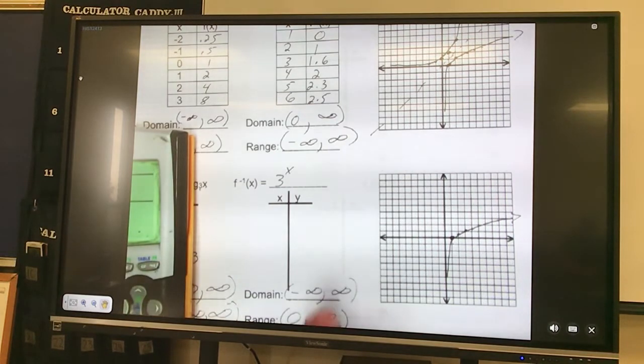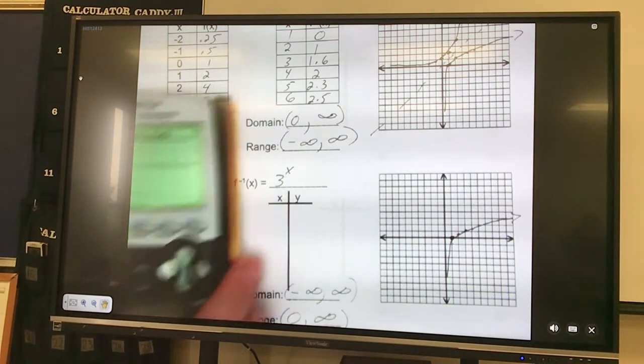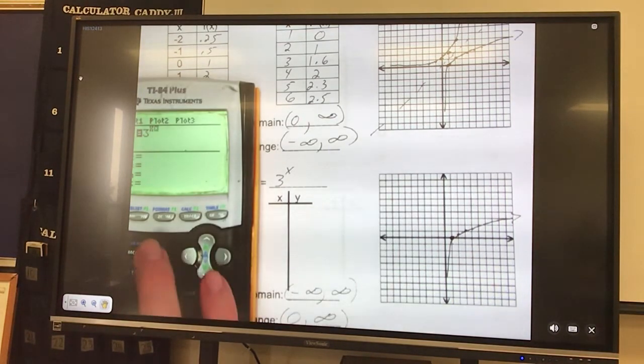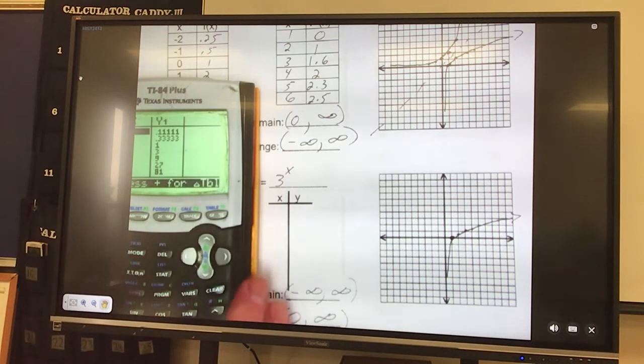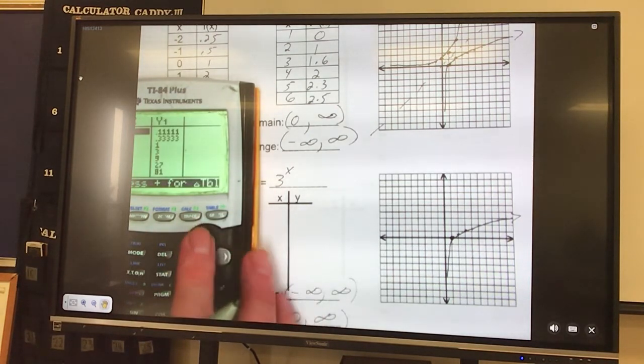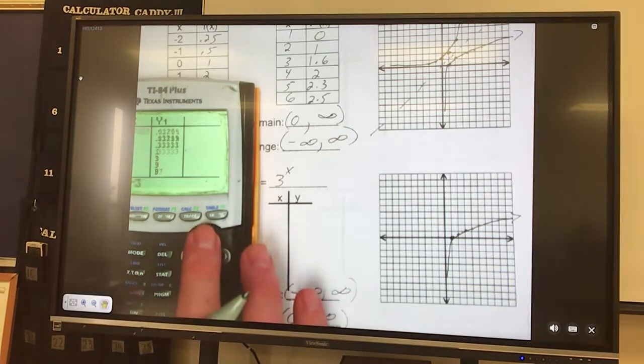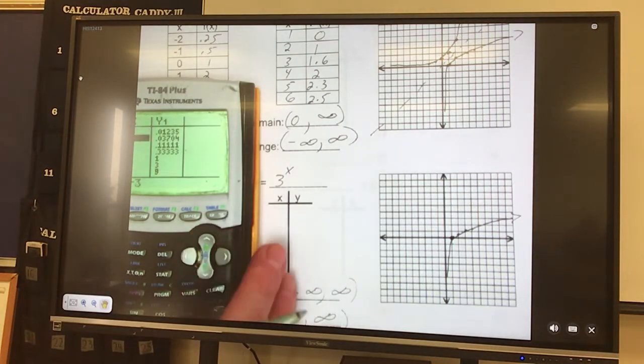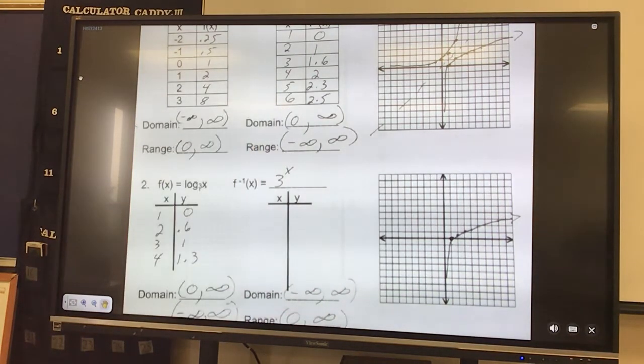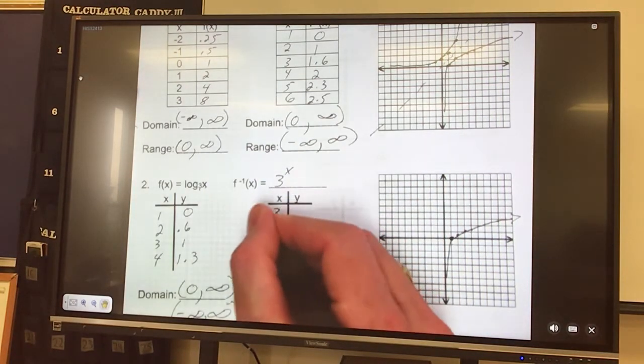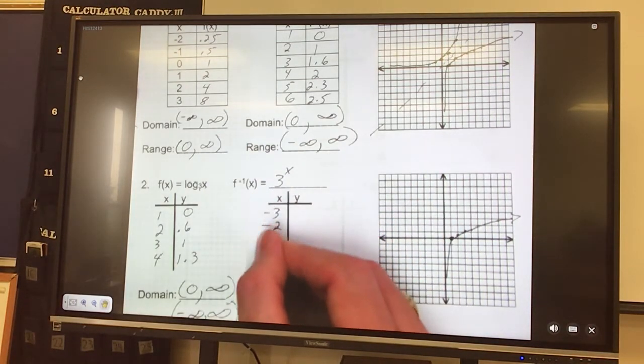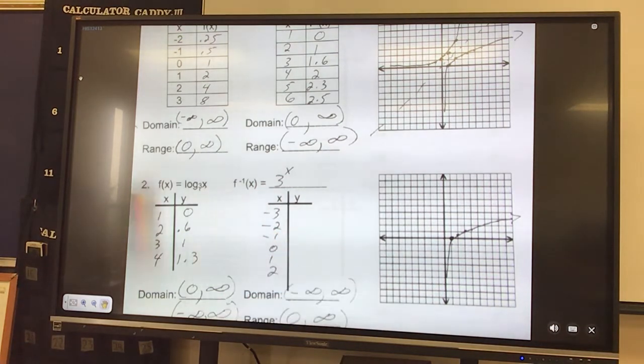Clear. 3 raised to the x power. Go to our table. And we'll even throw in, let's go negative 3 to 3. How about that? Negative 3 to 2. So negative 3, negative 2, negative 1, 0, and 1, 2. That'll give us a good look.